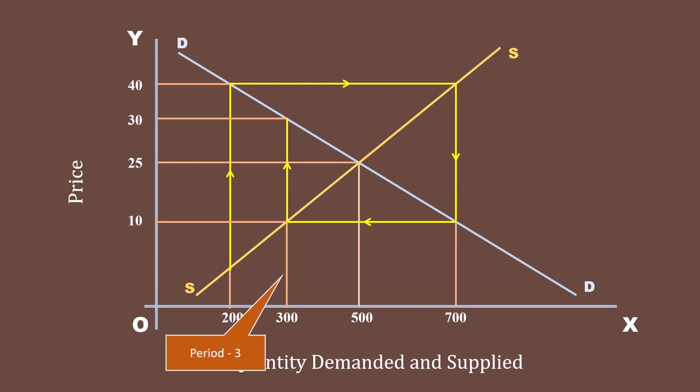Once again, reinvigorated by the rise in price from 10 rupees to 30 rupees in period 3, the farmers produce more and supply 600 units in period 4. You know, the buyer's behavior is governed by the demand curve DD. They buy this output at 20 rupees. The price in period 4 makes the farmers to supply 400 units of output in period 5. Okay. If this process continues in this manner, at last equilibrium will be reached.